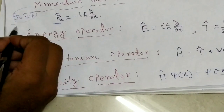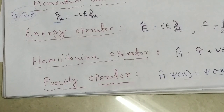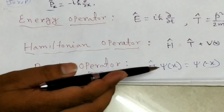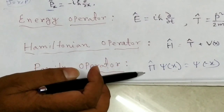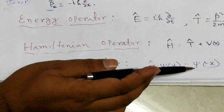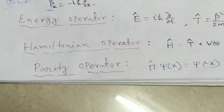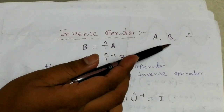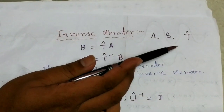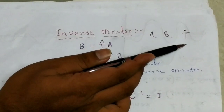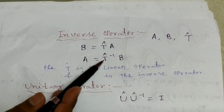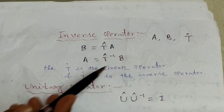For the parity operator: if psi(x) is a function of x and pi is the parity operator, then we write psi(minus x) — that is the parity operator. For the inverse operator: if A and B are two different linear spaces and T is a linear operator with B equal to T(A), then A equals T-inverse(B), making T the linear operator and T-inverse the inverse operator.